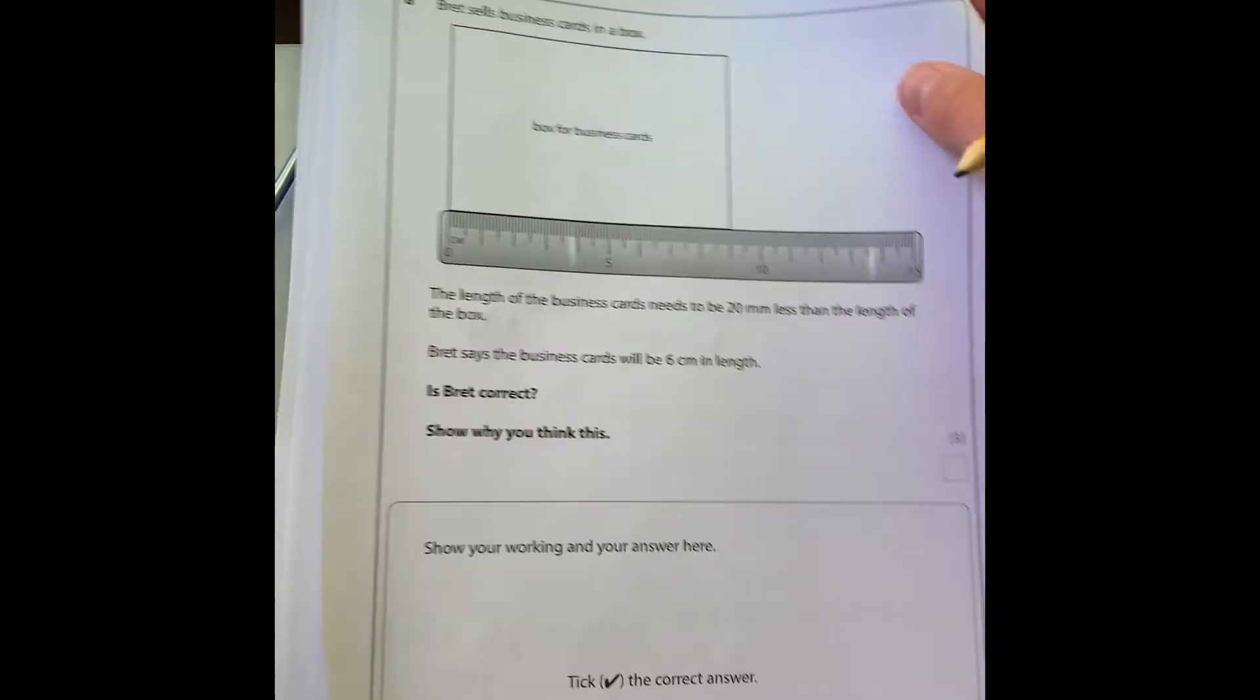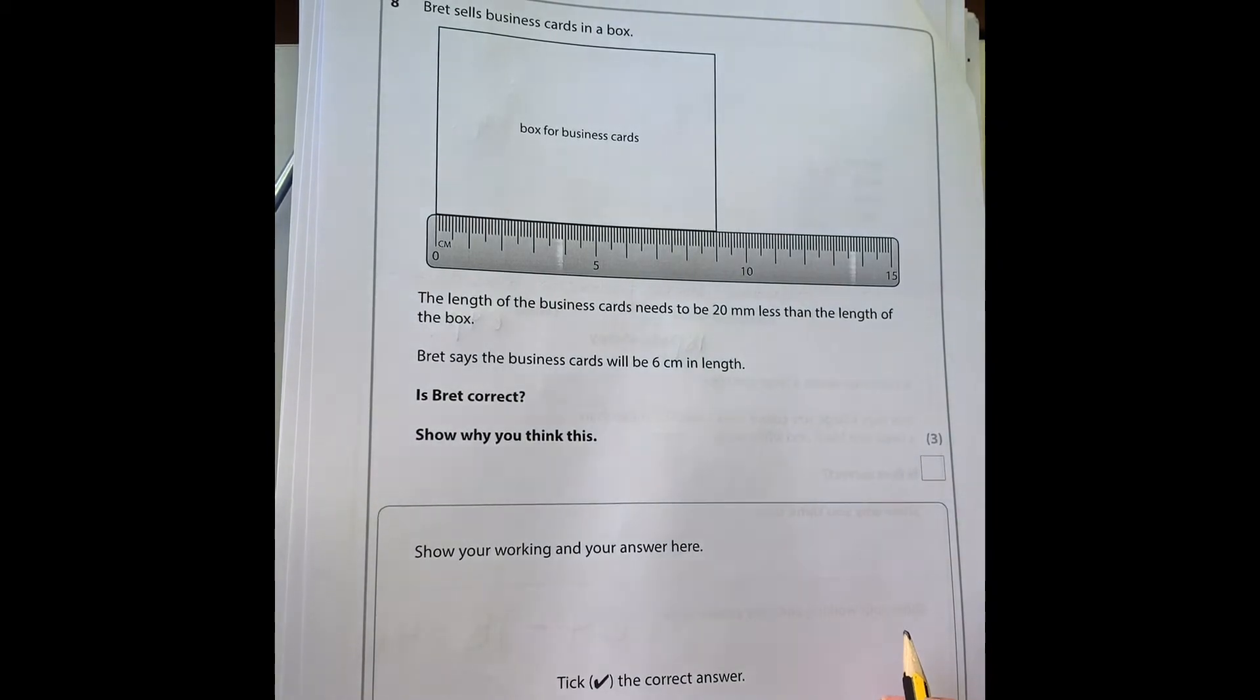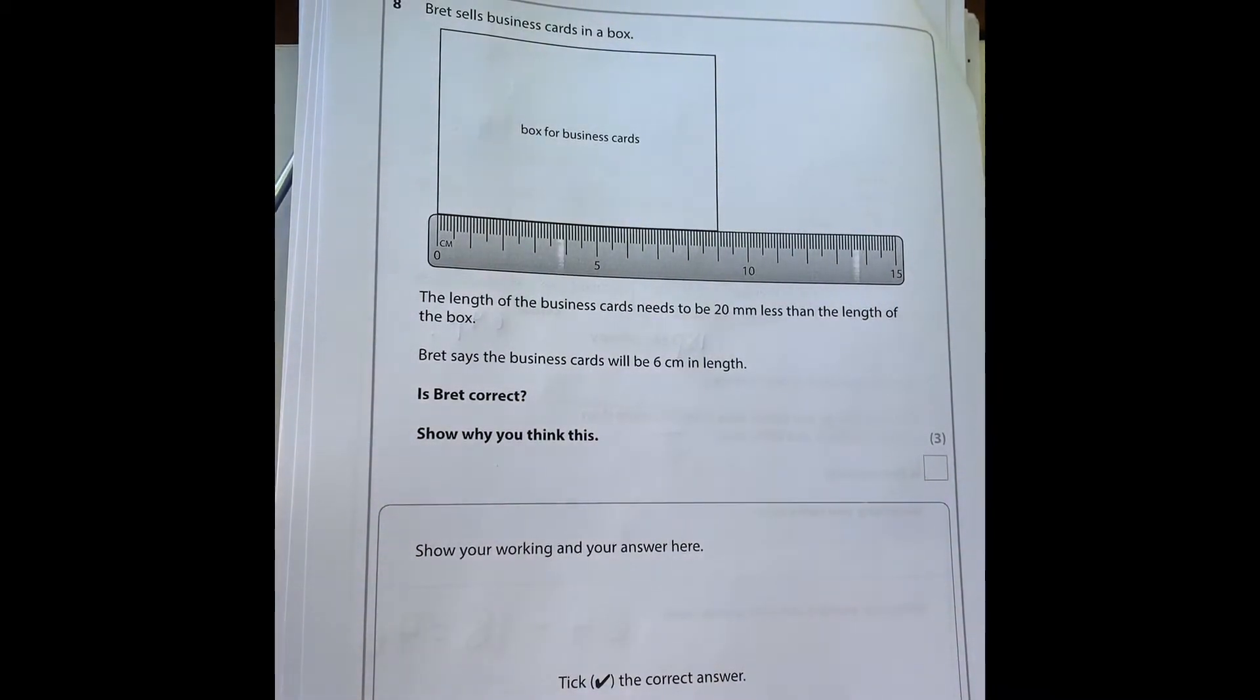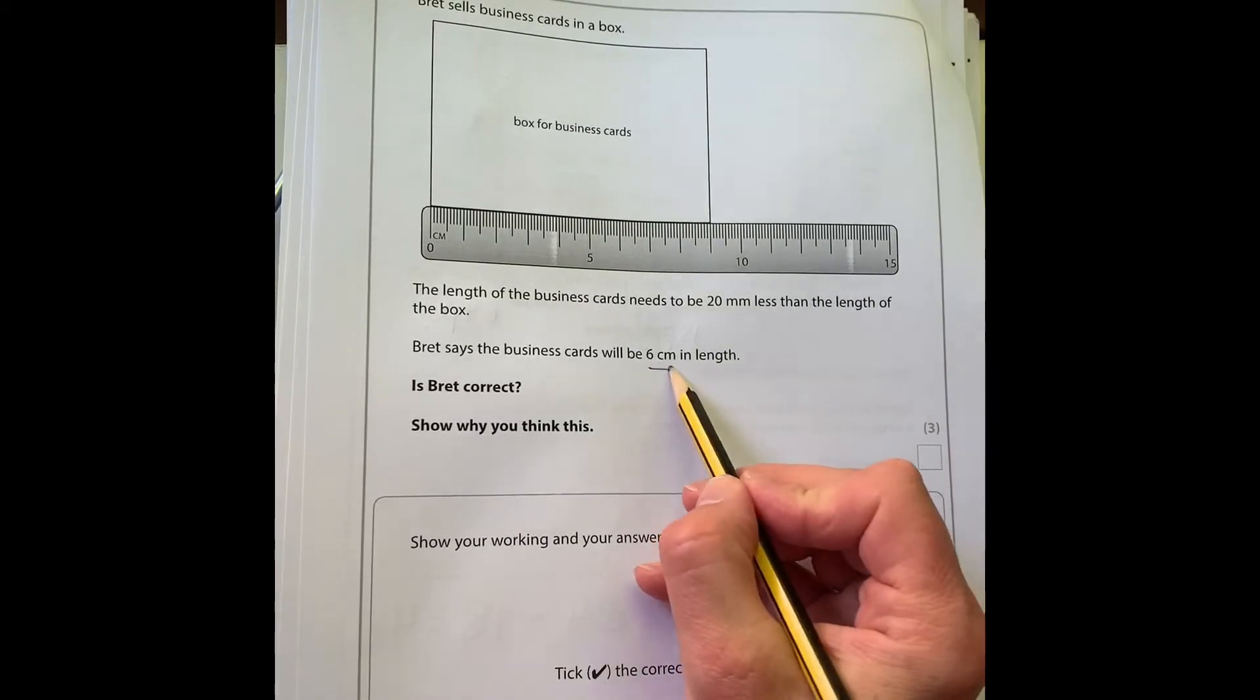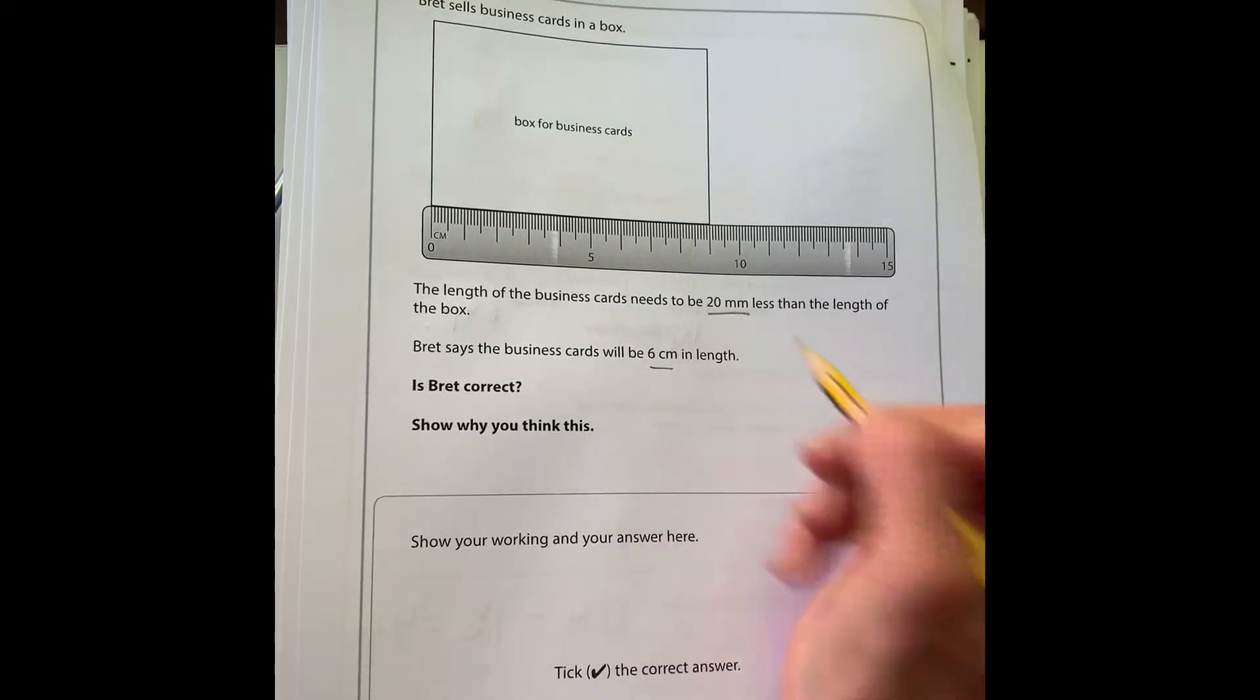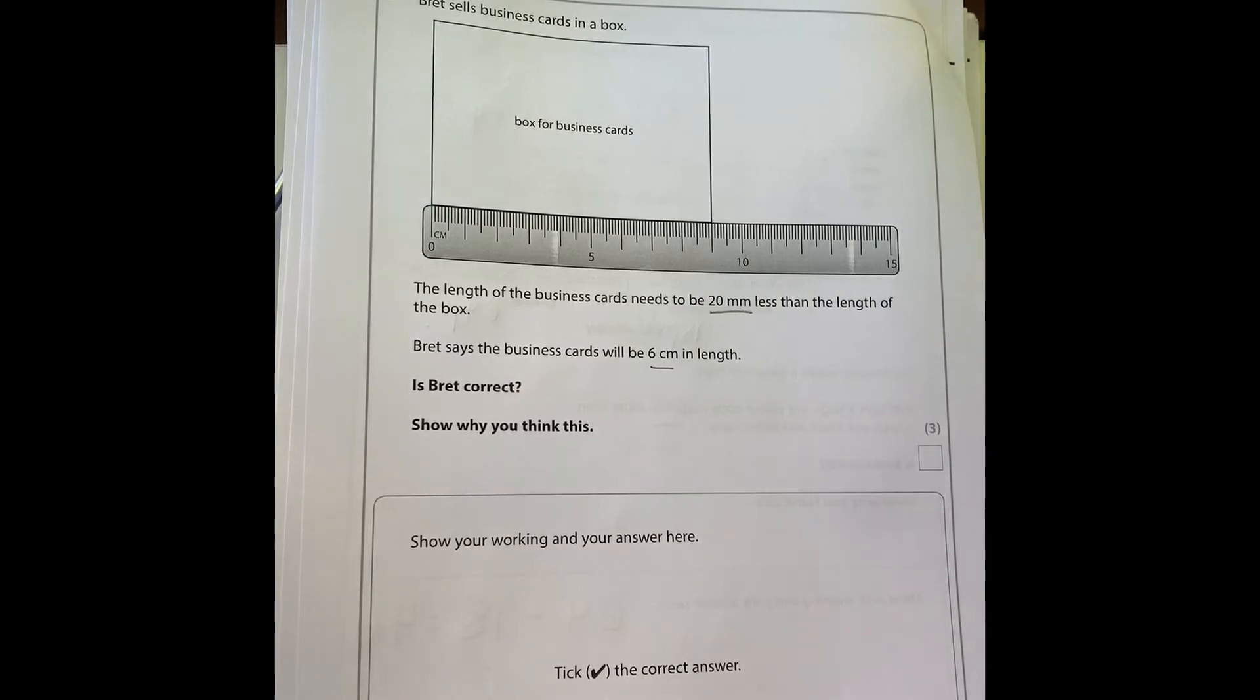Question eight: Brett sells business cards in a box. The length of the business cards needs to be 20 millimeters less than the length of the box. Brett says the business cards will be six centimeters in length. Is he correct? Again here we have two different measures: six centimeters and 20 millimeters. We need to put them both in the same unit so it's easier to compare.